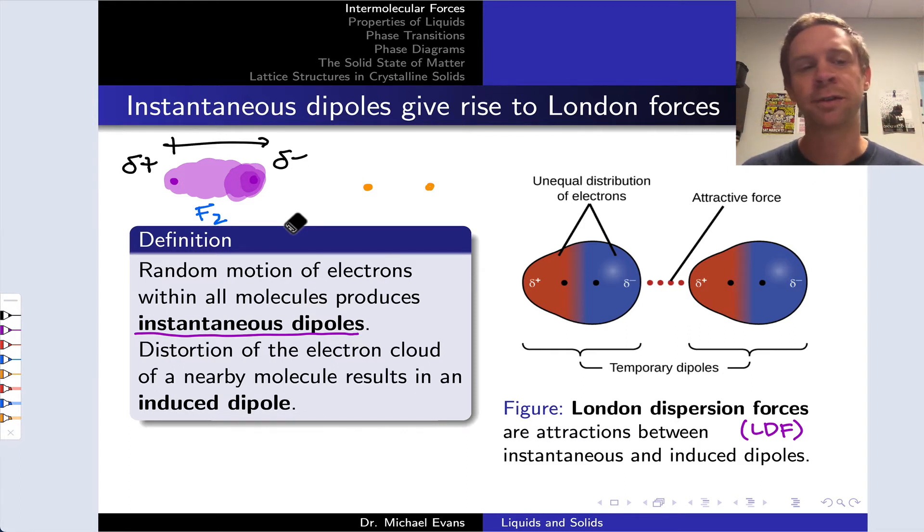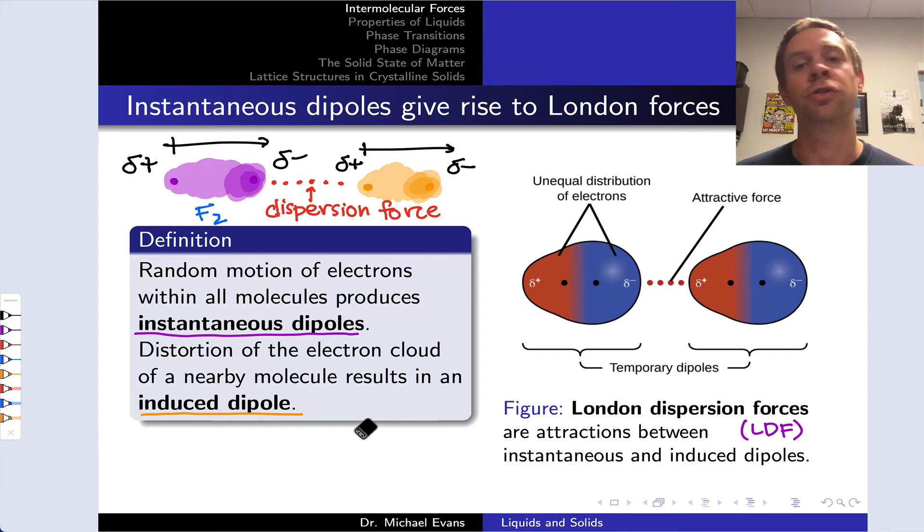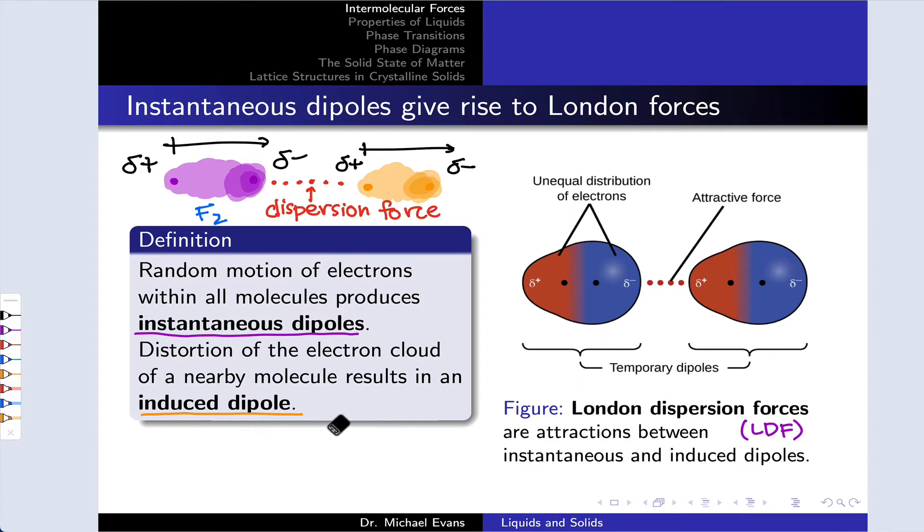In that briefest of moments, when the electron distribution is asymmetric, if another F2 molecule comes along, the electrons now are pushed away from the negative end of the instantaneous dipole in this F2 molecule. That induces a dipole in the nearby second F2 molecule such that the negative and positive ends are relatively close to one another, and this results in an attractive force, what's called a dispersion force or London dispersion force.